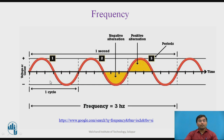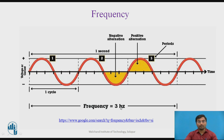The number of cycles completed in one second is the frequency. Here, this is the time up to one second, and in this one second, three cycles are completed — 1, 2, 3. So the frequency is 3 hertz — that is, three cycles in one second.